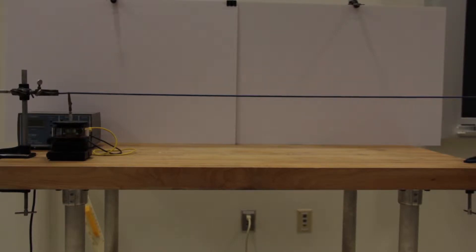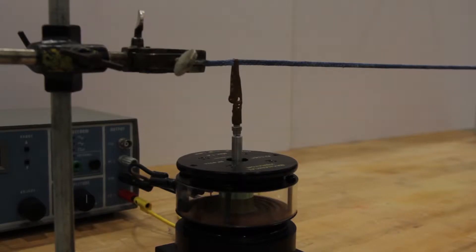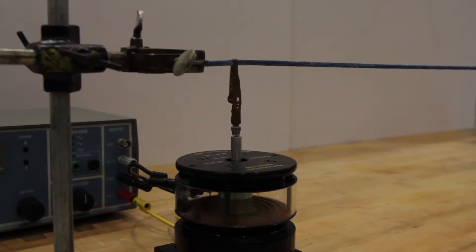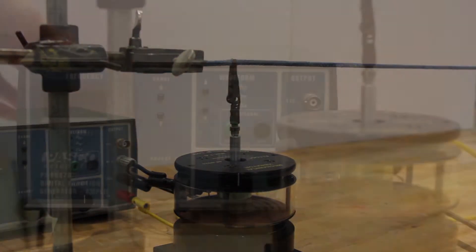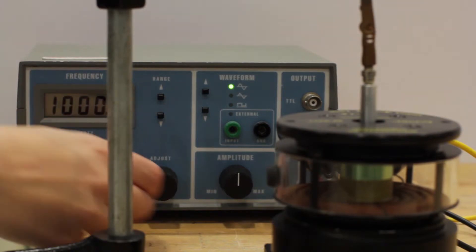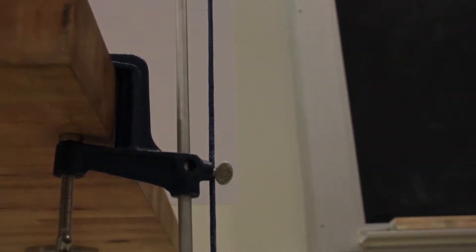This apparatus is useful for displaying standing waves on a string. On the left, a vibrator moves up and down very rapidly, creating a wave traveling to the right. One can control the frequency of the vibration, as well as the velocity V of the wave, for this type of string through hanging weights.